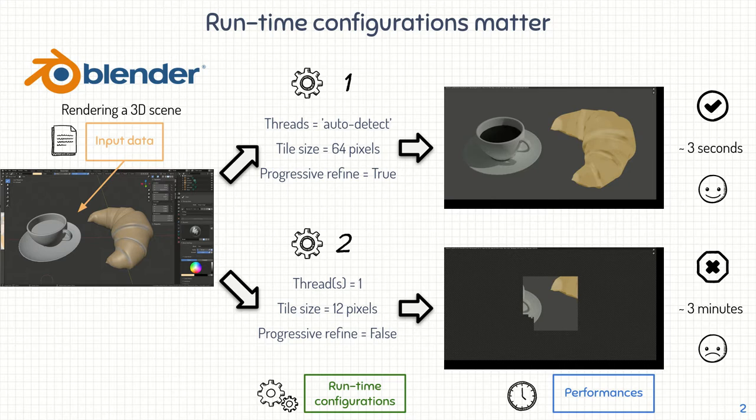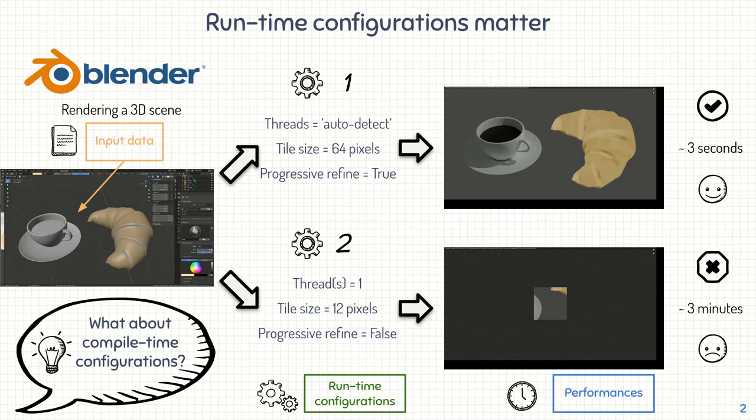But in this slide, there is something missing. Because before being binaries we can execute, software systems like Blender are just source code and we have to compile them at some point. During these compilation phases, we can select compile time options that may also have an impact on performance. And just like runtime configuration 1 outperforms runtime configuration 2, maybe there are also better compile time configurations to use in order to increase software performances.